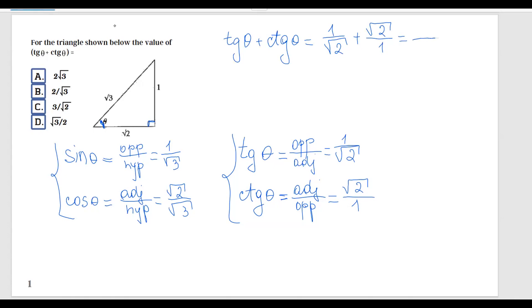Tangent of theta we already found is 1 over square root of 2, and cotangent of theta is square root of 2 over 1. If you remember the old math, we're going to find the common denominator. Square root of 2 divided by square root of 2, we have 1, and then square root of 2 divided by 1, multiply it by square root of 2. One multiplied by 1 is 1, plus square root of 2 multiplied by square root of 2 is 2, and this gives us the result of 3 divided by square root of 2.